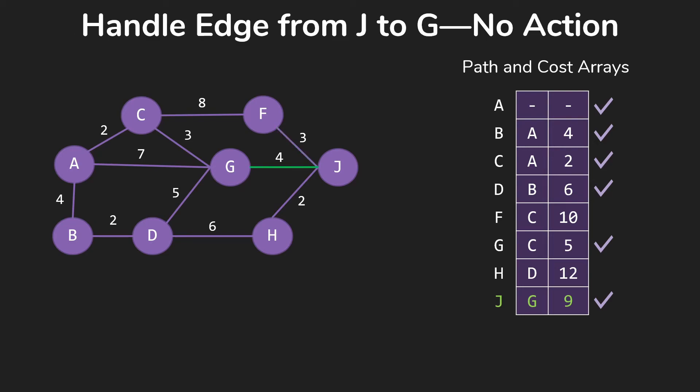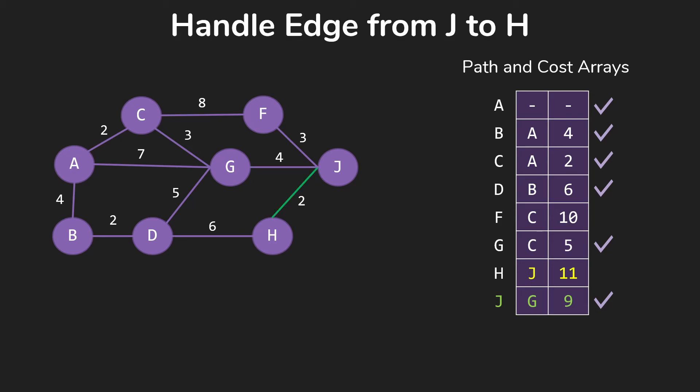We check G, of course, that's already recorded, so we're done, don't need to do anything about that one. And then when we get to H, we did have 12 from D. 9 plus 2 is 11, so we're going to update the array to be from J for 11, instead of from D for 12.